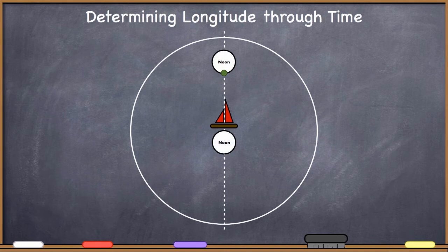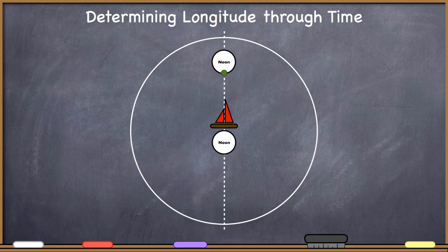Okay everyone, welcome back. Let's take a look at exactly how you can determine your longitude if you have a very accurate timekeeping piece, such as the marine chronometer that John Harrison created when he won the prize to determine longitude.